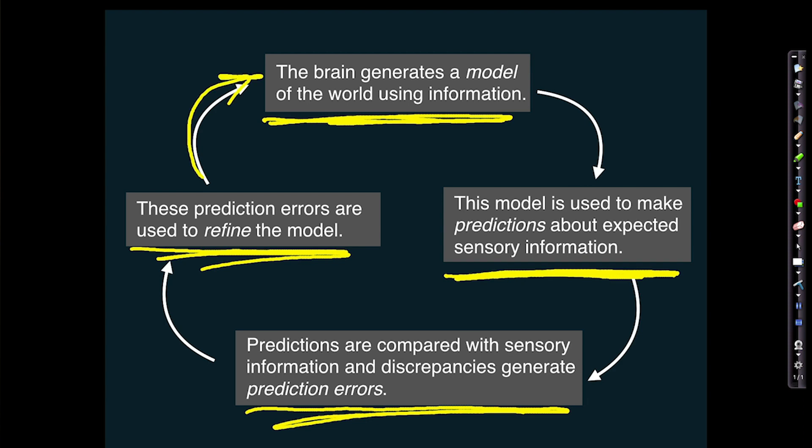A new model is generated, producing new predictions about expected sensory information, and hopefully prediction errors are reduced. Every single moment the brain is comparing its predictions about the immediate future with what actually happens — it's comparing predicted sensory information to actual sensory information. It's not something that updates every few seconds; it's a rolling process. The brain always has this model and is always using it to make predictions.